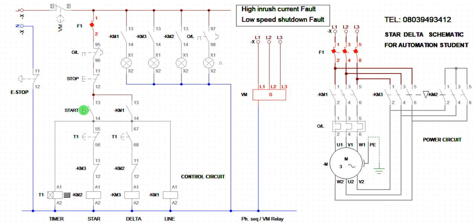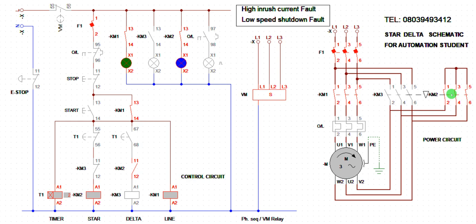Let's simulate. I put on the operation — the line contactor and star contactor are now on, the motor is running. After a few seconds, the delta takes over: the star gets disengaged and the delta gets energized. The motor is now running on high speed. The system is working correctly.